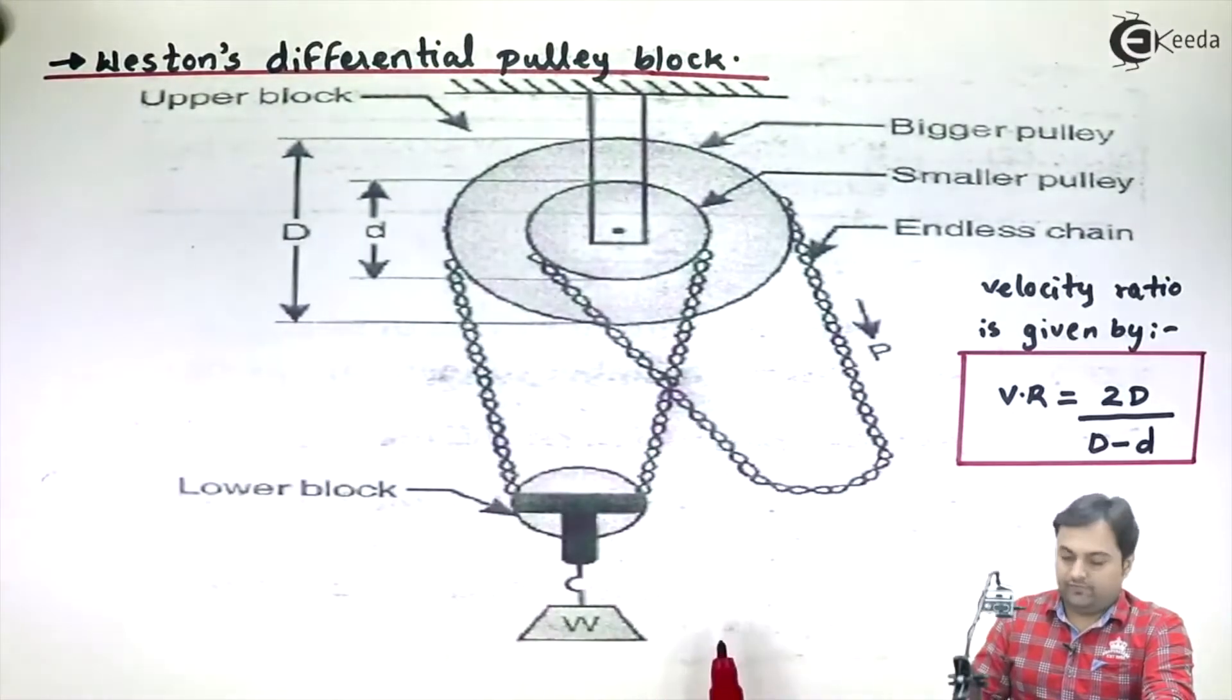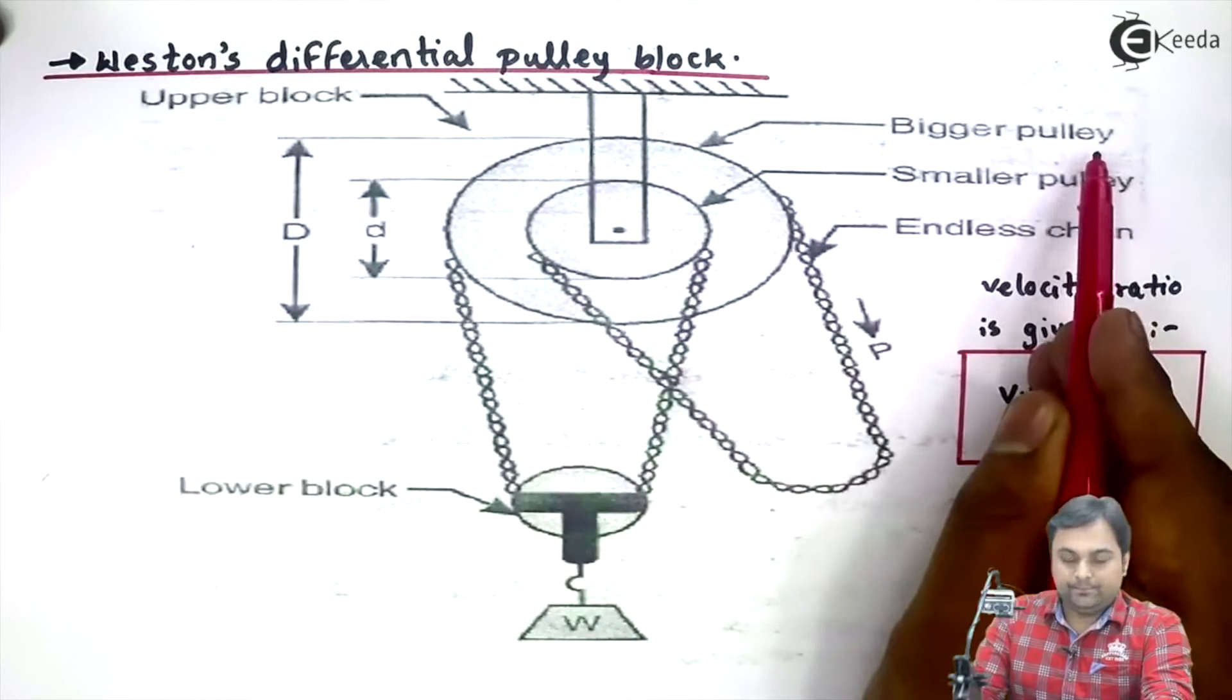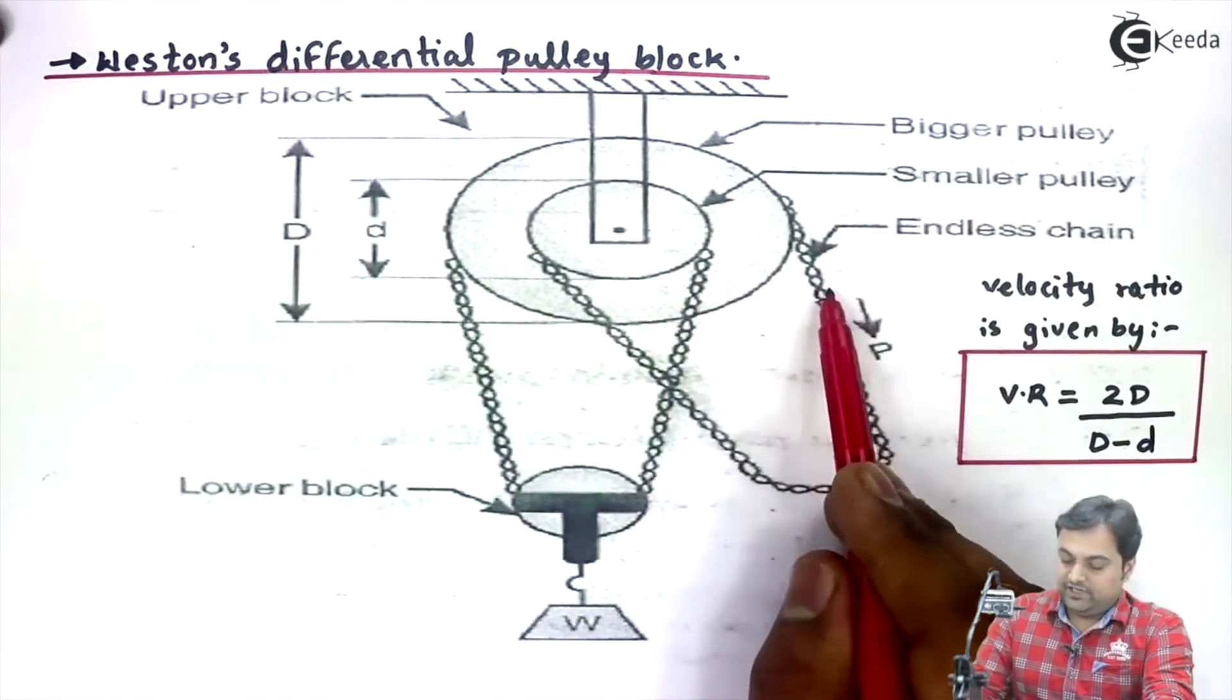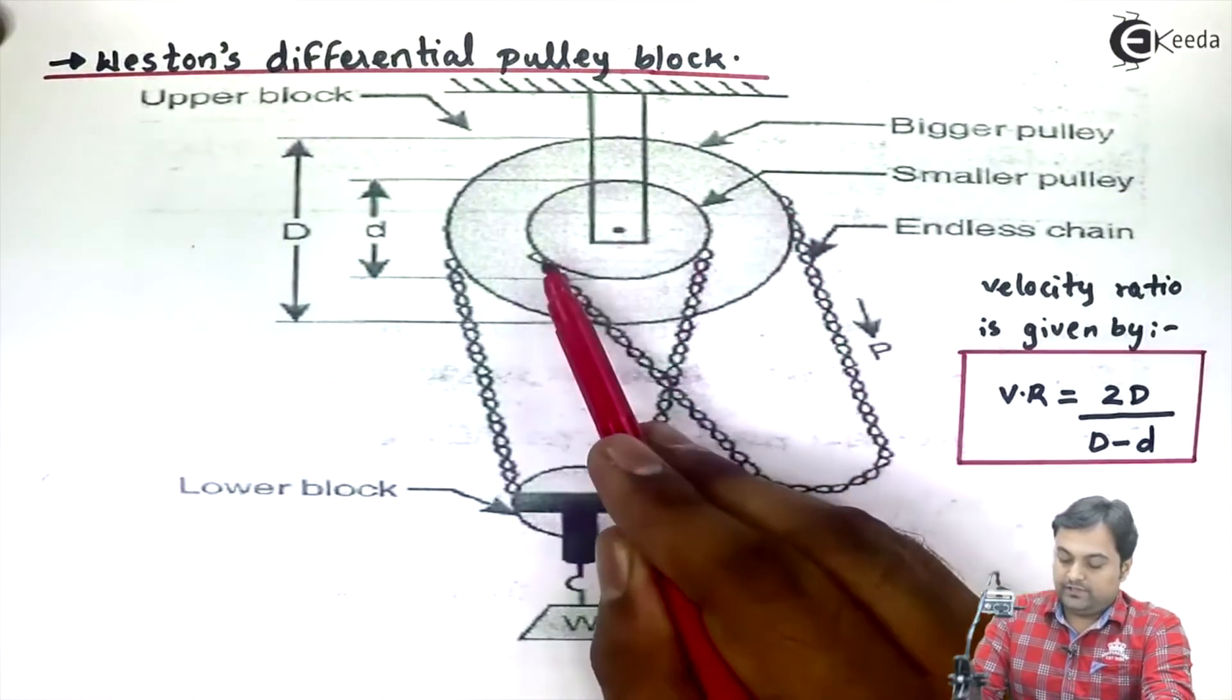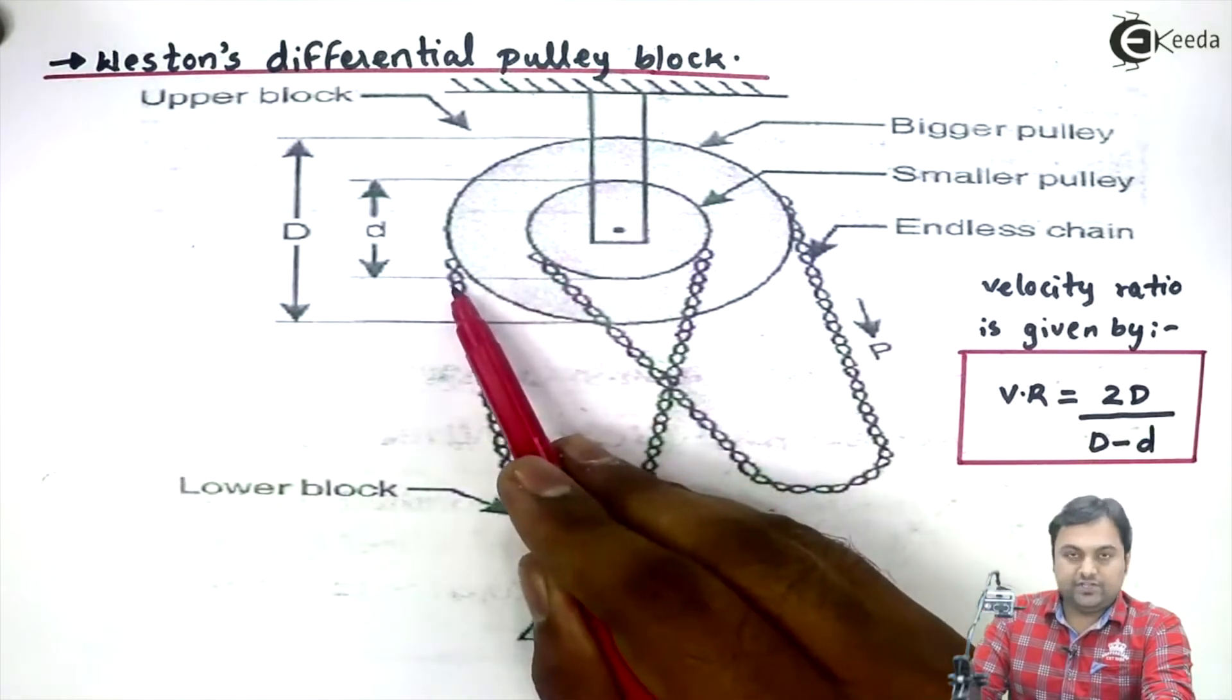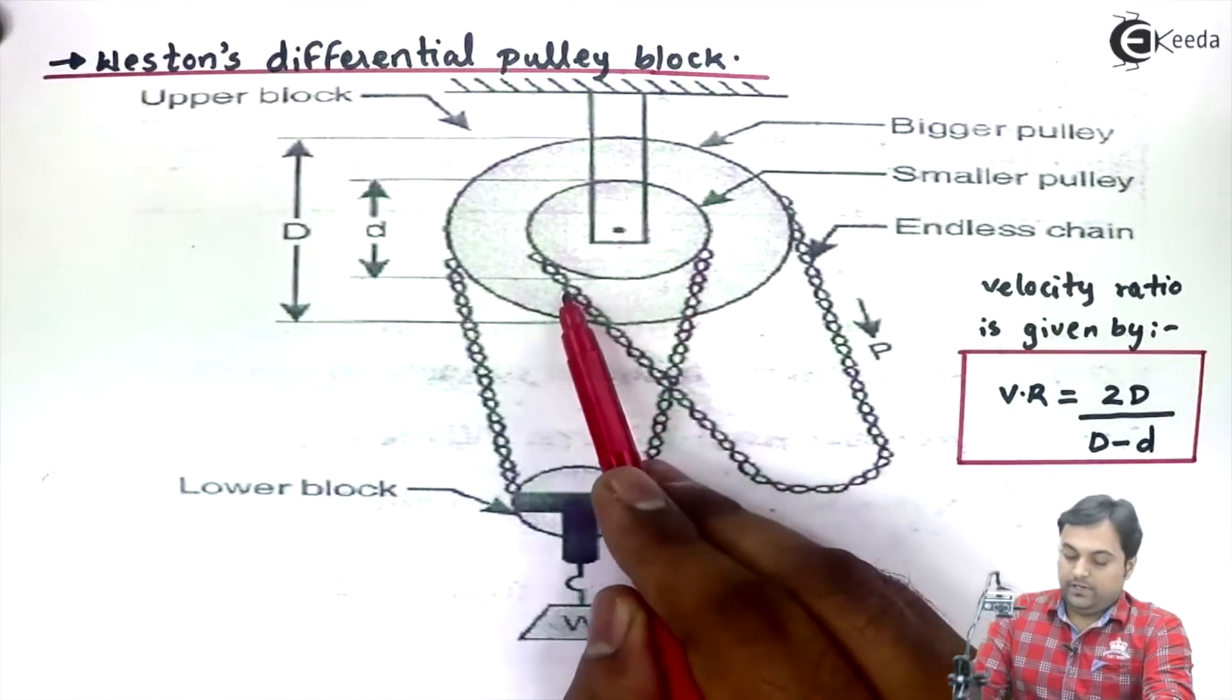This consists of a smaller pulley and a bigger pulley. The connection is such that we have a chain whose one end is connected to the bigger pulley and the other end is connected to the smaller pulley. Similarly, we have another chain which is connected to the bigger and smaller pulley respectively.